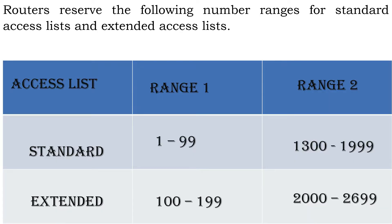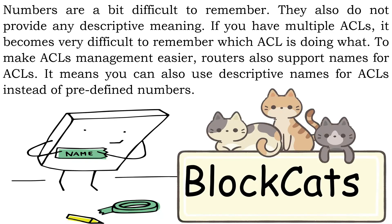Routers reserve specific number ranges for standard access lists and extended access lists. Numbers are a bit difficult to remember and do not provide any descriptive meaning. If you have multiple ACLs, it becomes very difficult to remember which ACL is doing what. To make ACL management easier, routers also support names for ACLs, meaning you can use descriptive names instead of predefined numbers.